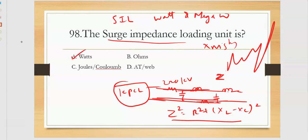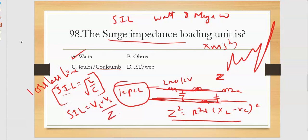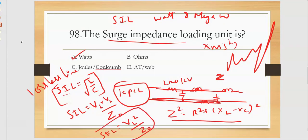We have two important formulas. SIL is square root of L by C. This is for lossless line. Surge impedance loading formula will be square root of L by C. For a lossless line, please find the surge impedance loading. And the general formula: surge impedance loading is nothing but VL into VL divided by Z, ZC or Z naught. It is the surge impedance loading formula.